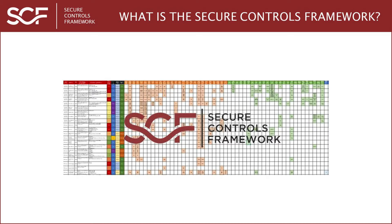That is truly unique to the SCF. However, the SCF is more than just a control set. Each control has a control weighting to help understand risk, since not all controls are the same. There is a built-in risk catalog and threat catalog where those risks and threats are mapped to SCF controls, a capability maturity model to help define what right looks like for your organization, a risk management model to enable holistic risk management practices at the control level, and an evidence request list to define expected assessment artifacts that would be reasonably expected to satisfy controls.